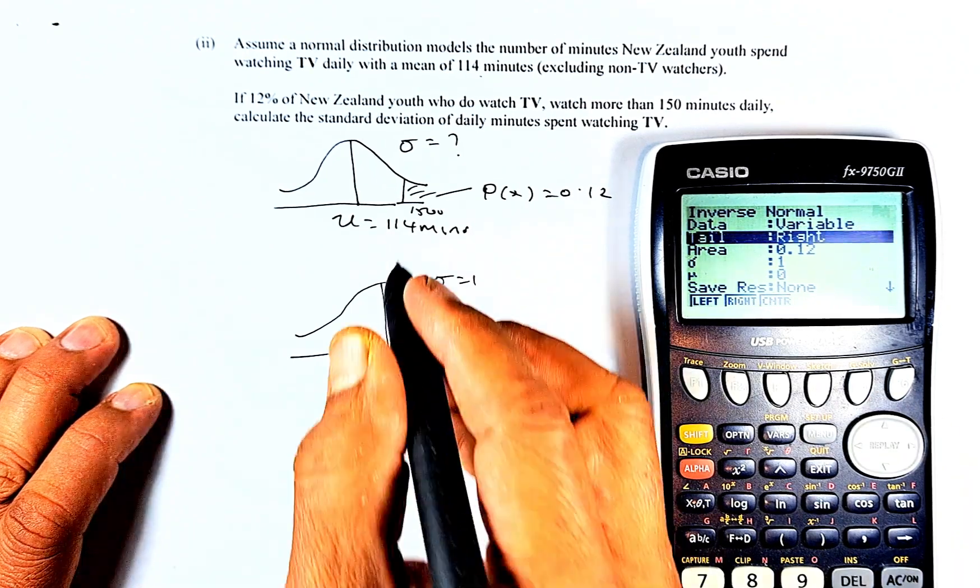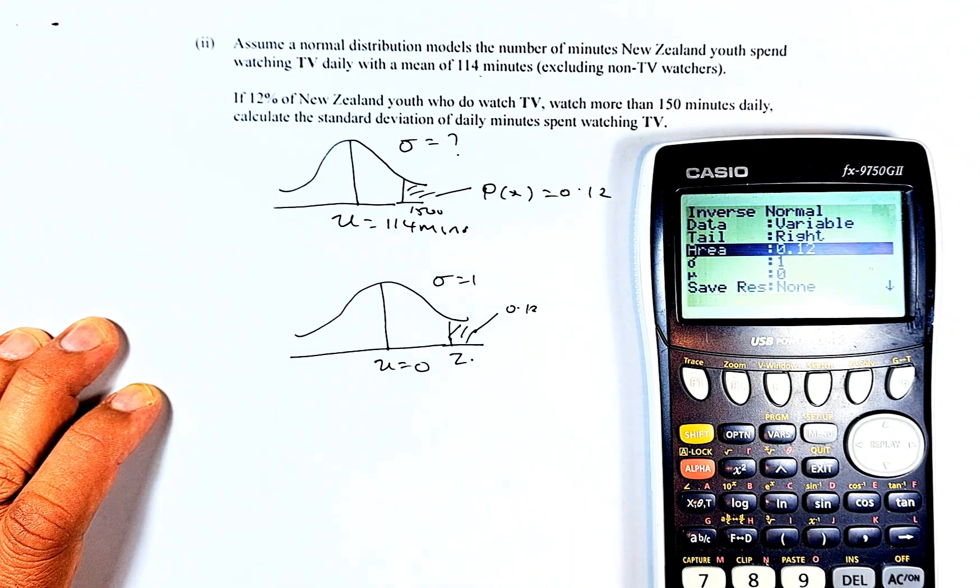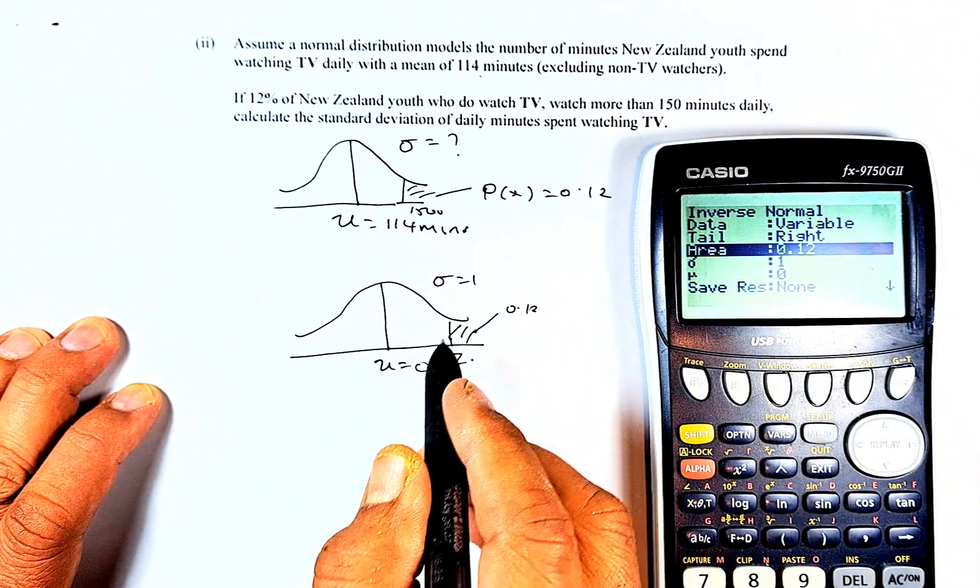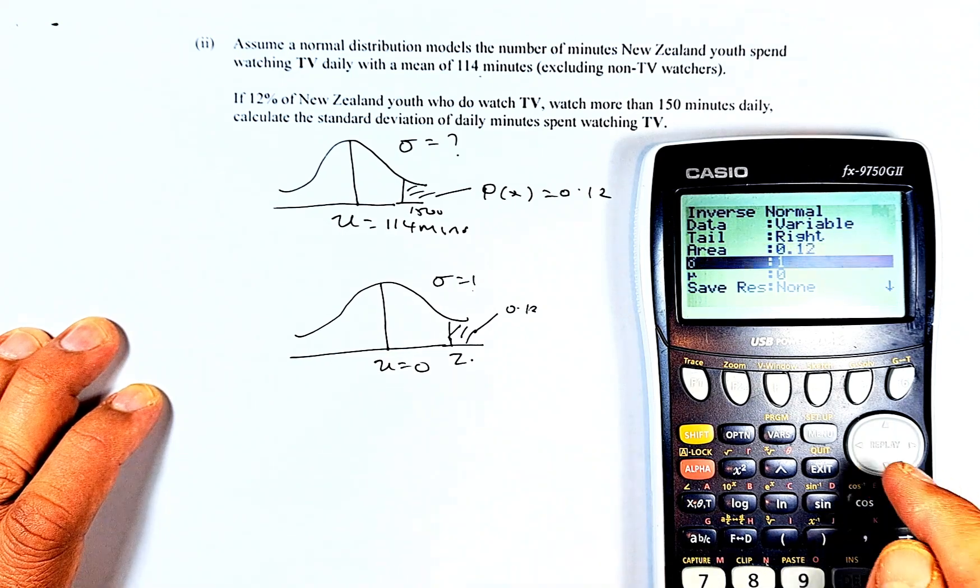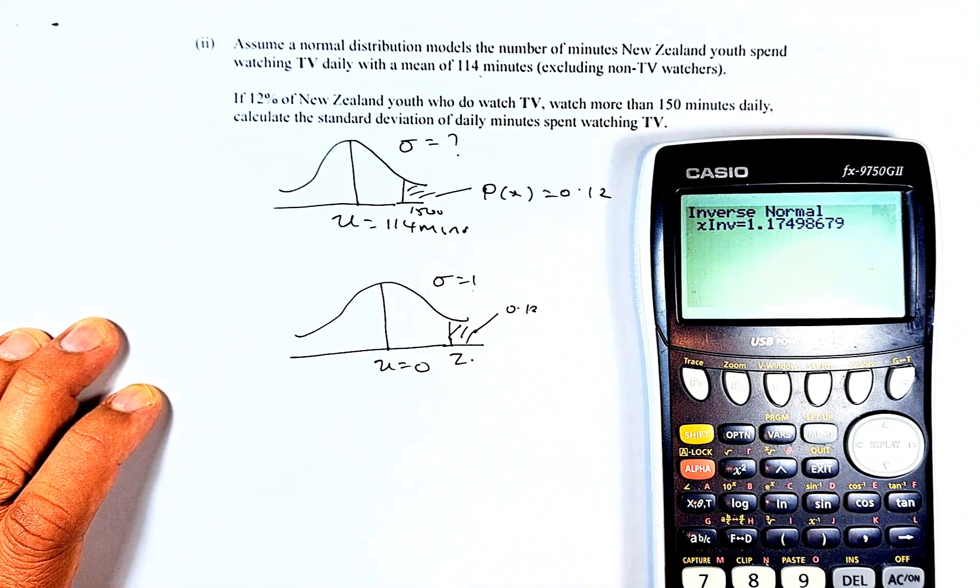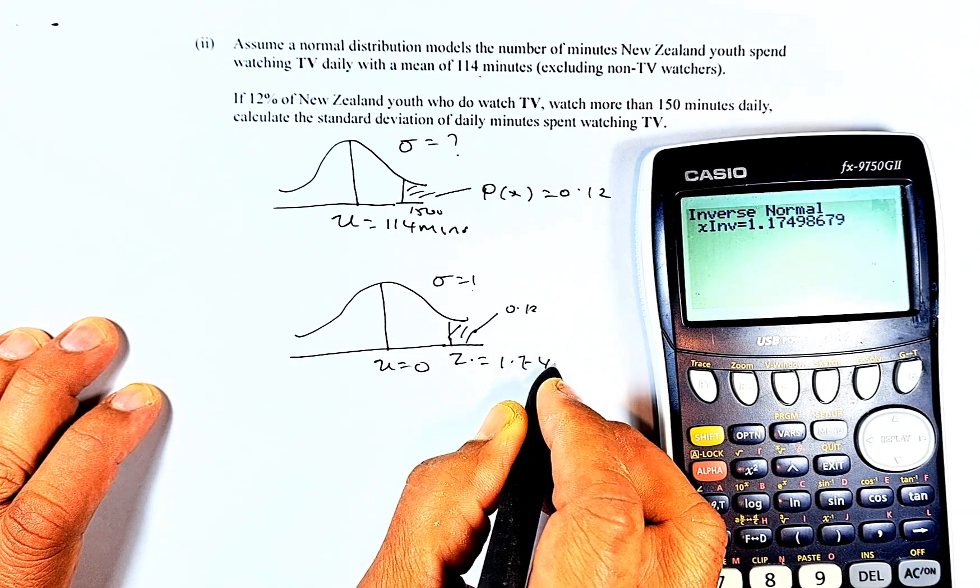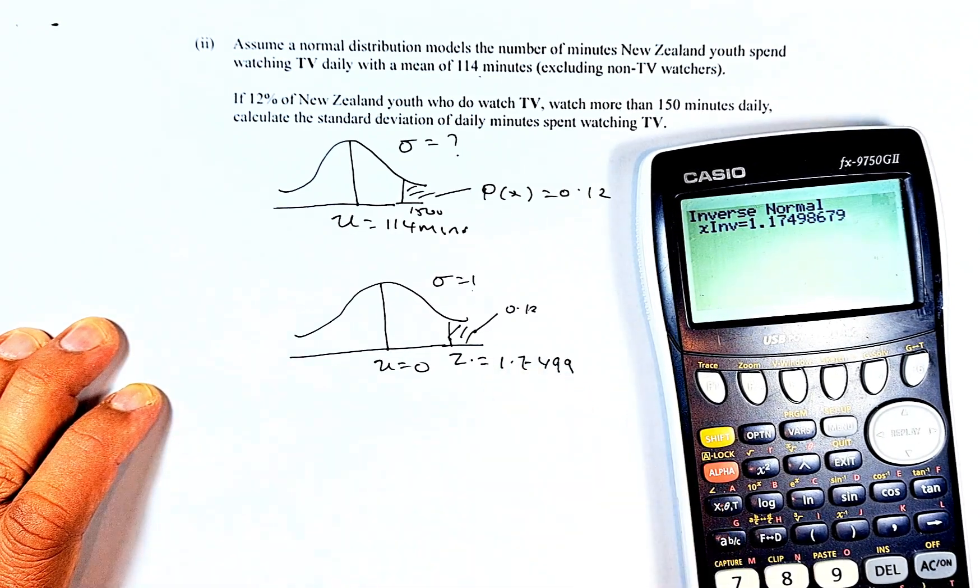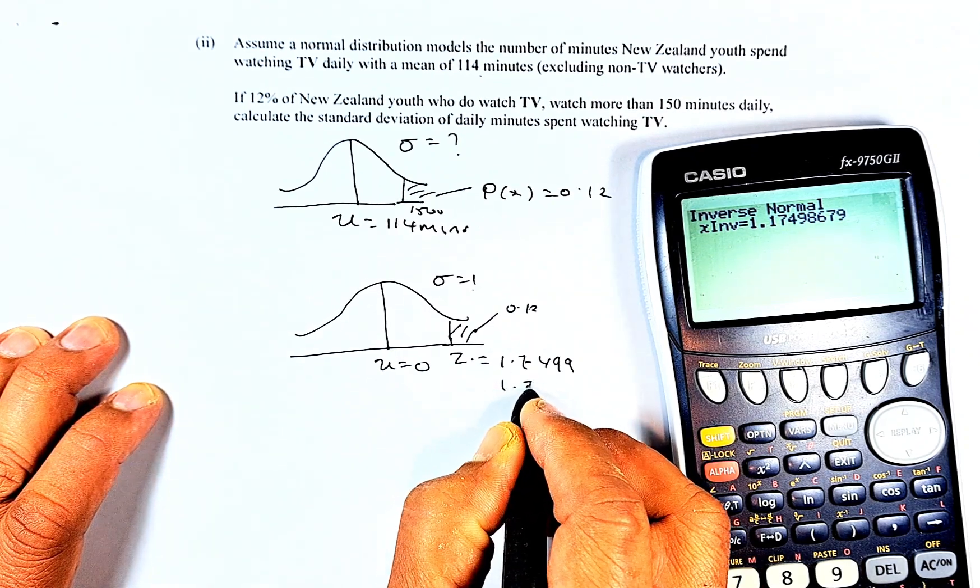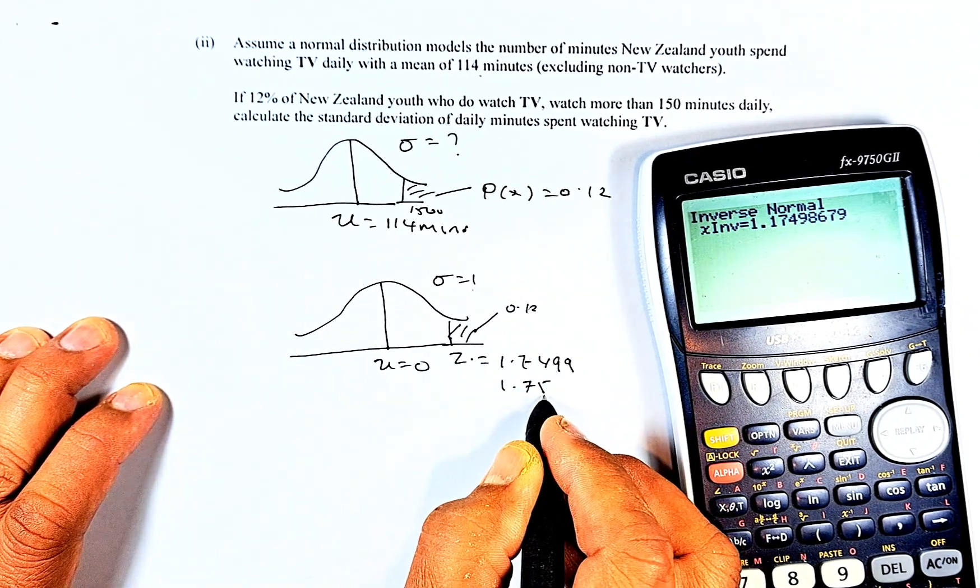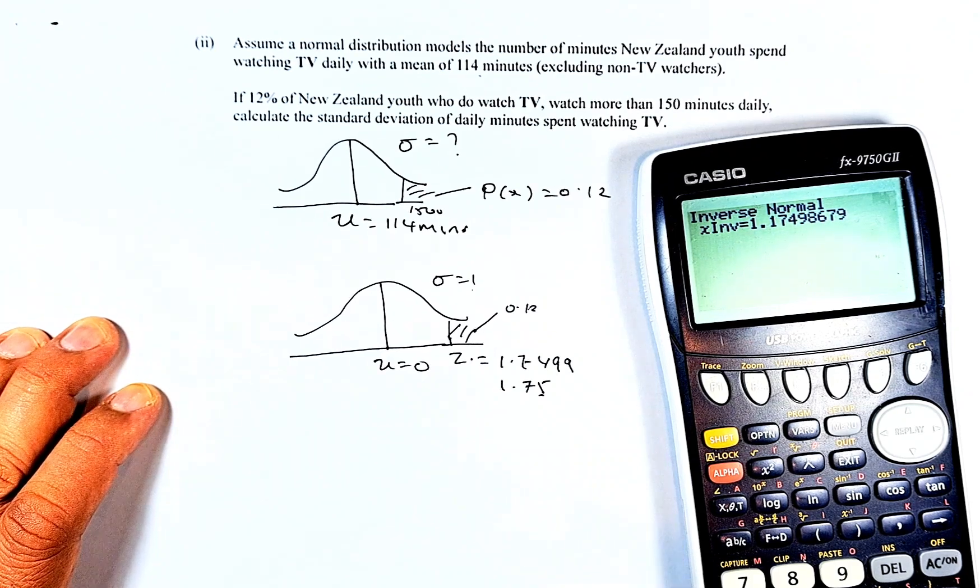Area, this area is 0.12, so we're going to put 0.12 and execute. And then the sigma we're going to standardize is equal to 1, and mu is 0. Once we have done that, we're just going to press execute. And the answer for Z is going to be 1.7499, or we're going to simplify to 1.75. So once we know that Z is 1.75, we need to convert back into the non-standardized.